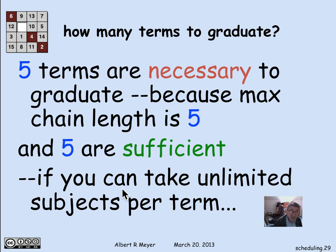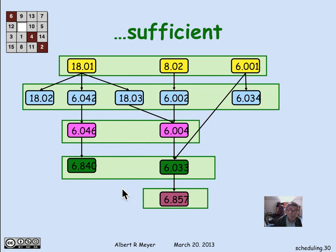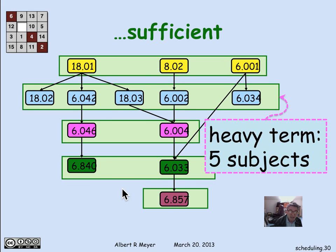This is providing that you can take an unlimited number of subjects per term. Remember, our strategy to graduate in five terms was to take as many subjects as we possibly could each term. So there's the sufficient way to take subjects to graduate in five terms. And of course, one consequence is that in my second term freshman year, I was taking five subjects because it was possible. But that leaves me with a kind of heavily loaded term compared to here's a term with two subjects, and there's a term with only one subject at the very end.